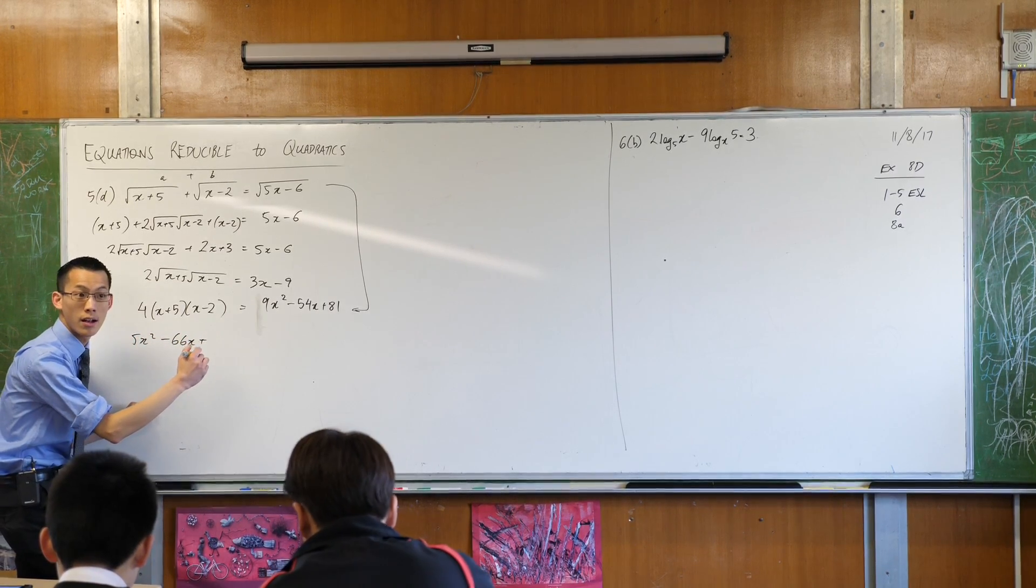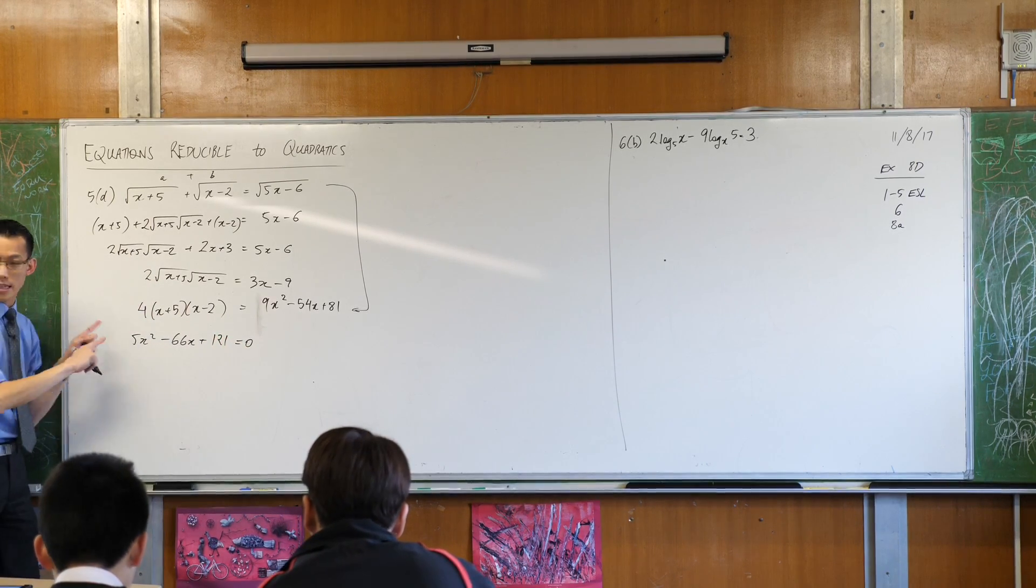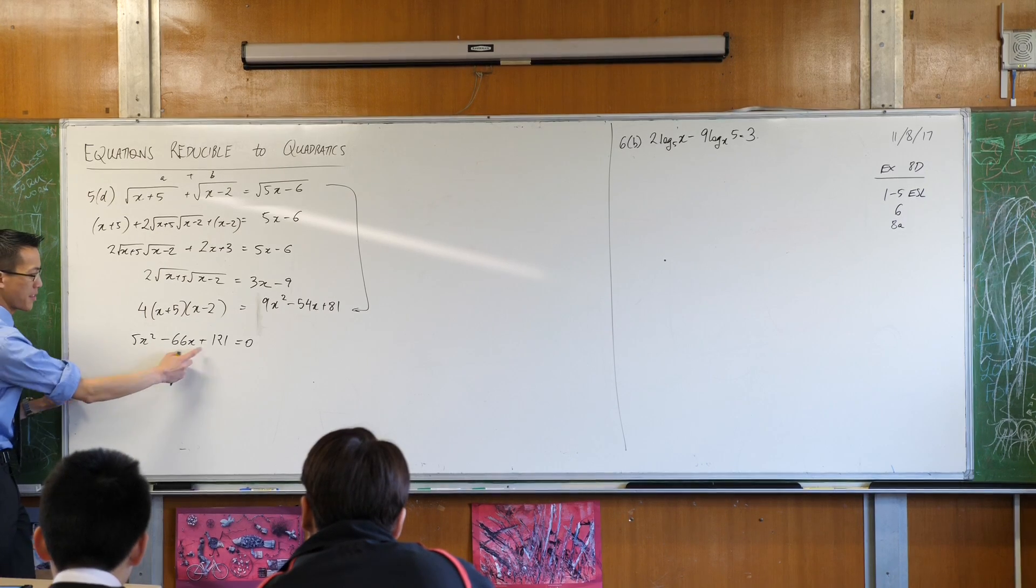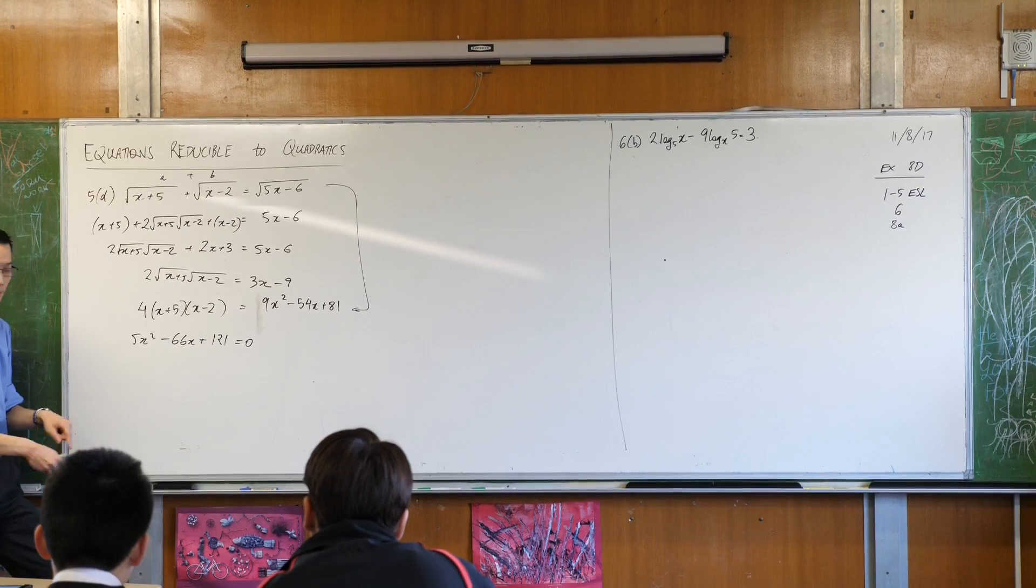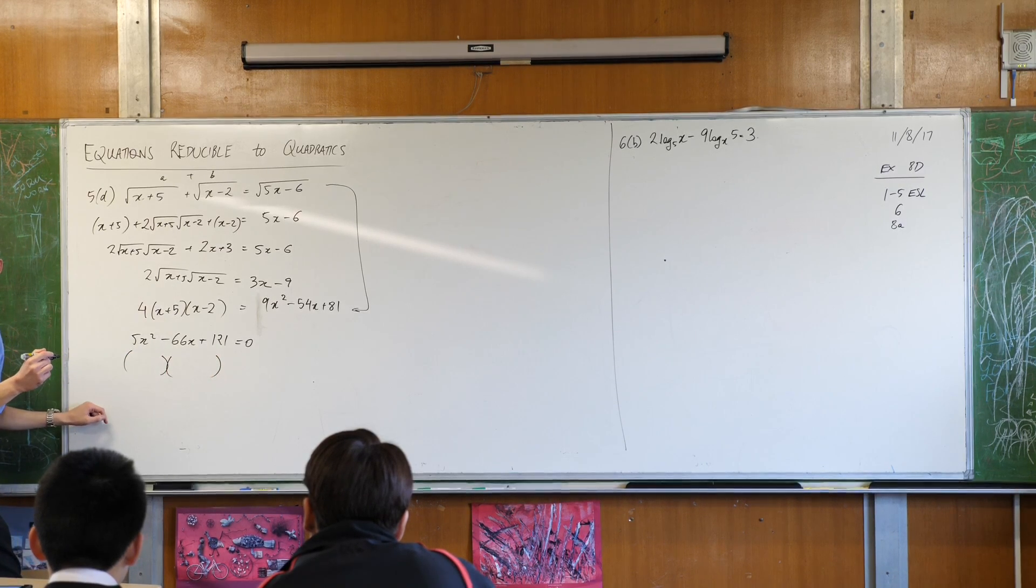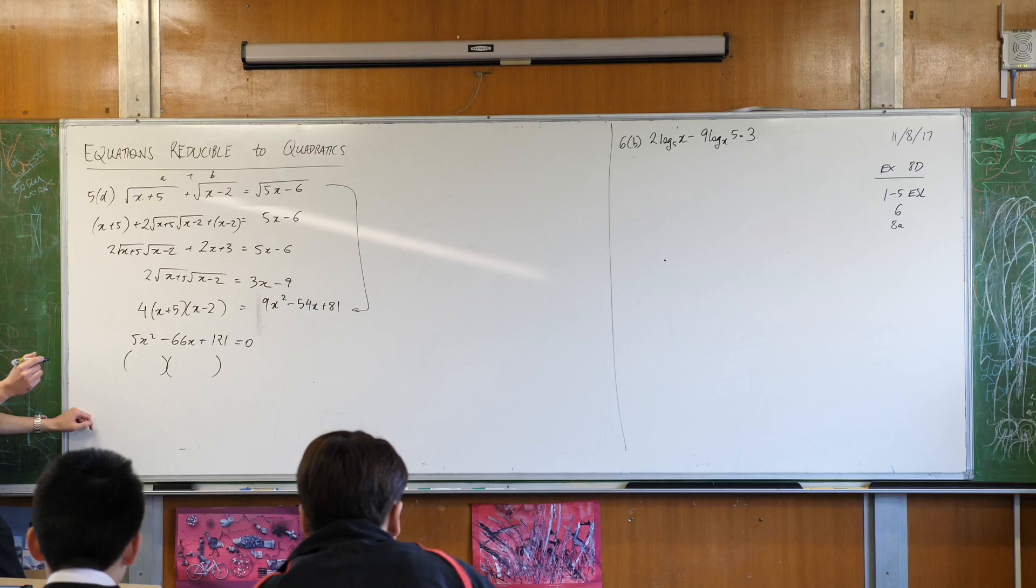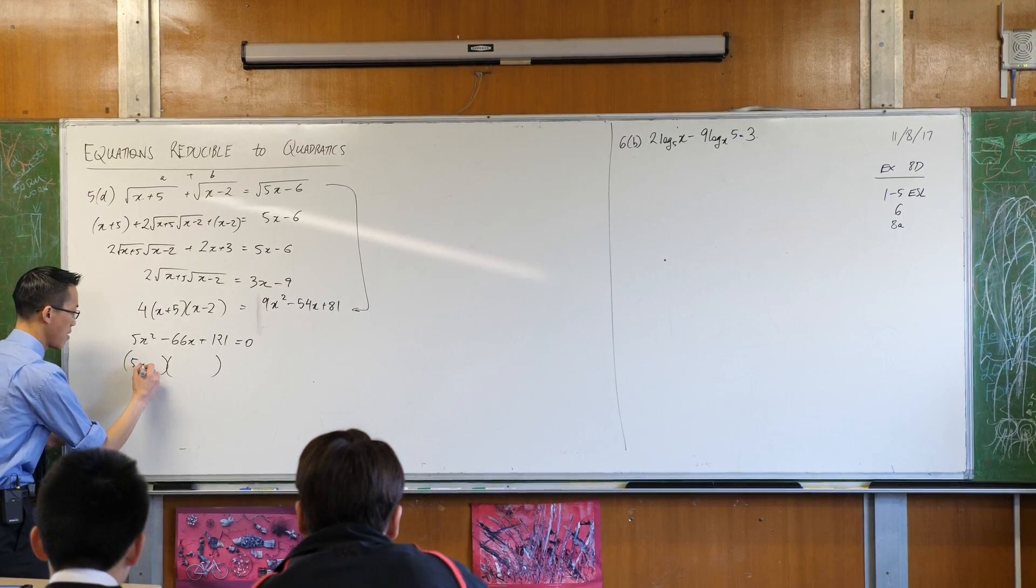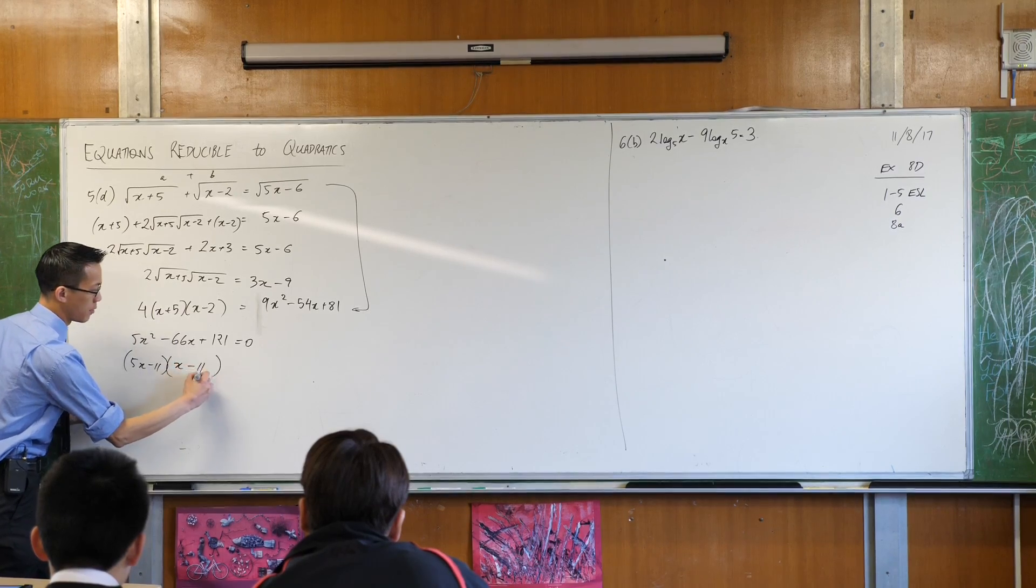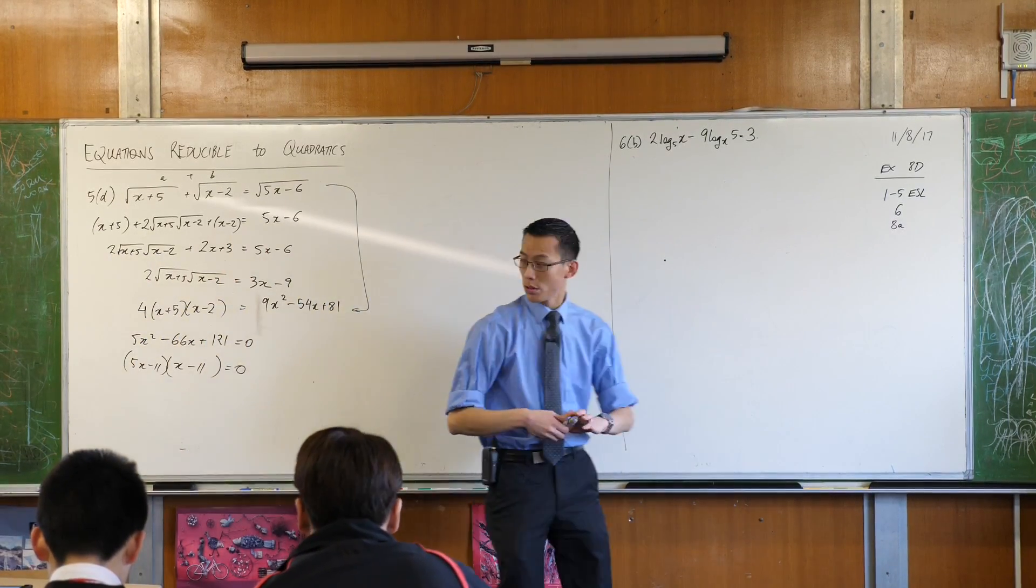Right, plus 121. Now when you get to this point it does look messy, but in fact some of the numbers will help you realize there's a very nice factorization of this. It looks like it's going to be 5x minus 11, and x minus 11. Yeah, that's what gives you that 121. That equals zero.